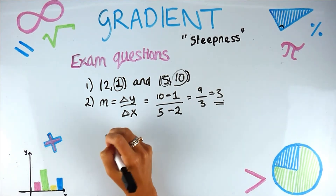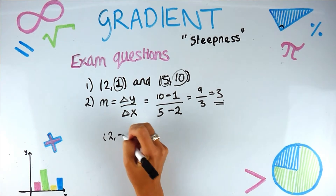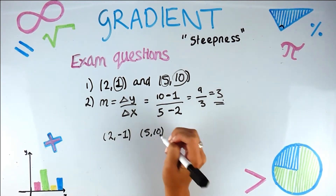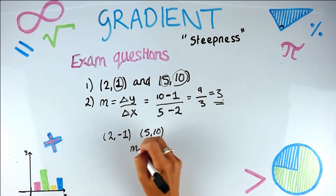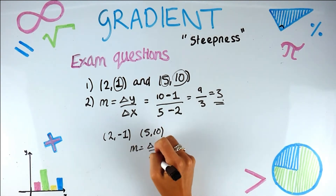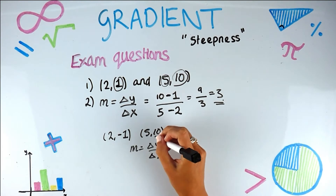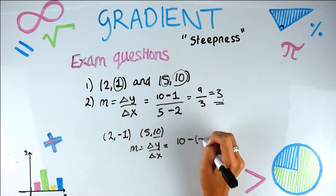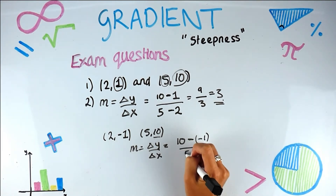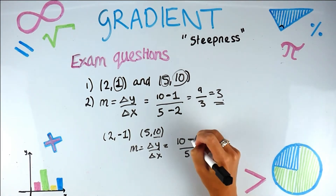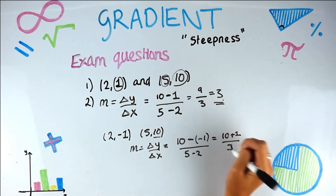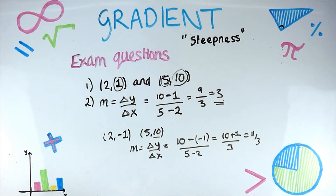Let me show an example with a negative coordinate. If I change the coordinates to (−1, 5) and (5, 10), the gradient would be: change in y over change in x = 10 minus (−1) over the same change in x. Two minuses make a plus, so that's 10 plus 1 over three — an example of handling a negative coordinate in your calculation.